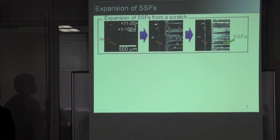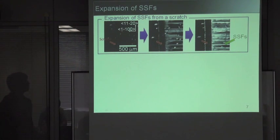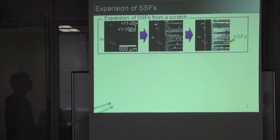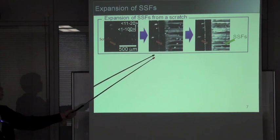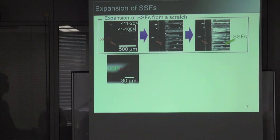I would like to move on to the experimental results. These are the photoluminescence maps of the same areas. We intentionally introduced a dislocation source by scratching the sample surface with diamond scribers. These brown bands indicate the scratch. As you can see, the Shockley stacking faults in white contrast expand as the excitation laser scanning was repeated. Then we selected one of the Shockley stacking faults and measured the excitation intensity dependence of the dislocation glide velocity.